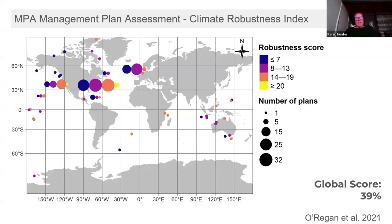Going back to the O'Reagan et al. publication from 2021, this figure of the world map shows the overall results of the climate robustness index. You get a general sense of where the plans came from, with the number of plans based on the size and color of the circle. But the main message is that globally, MPA management plans written in English did not score very well using the CRI, achieving an average score of only 39%.